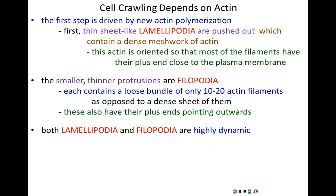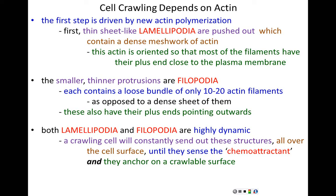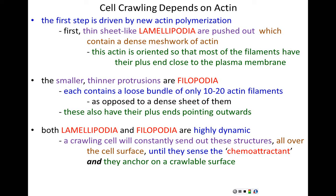Both lamellipodia and filopodia are highly dynamic and constantly changing. A crawling cell will only send out these structures to a region where it has sensed its signaling molecule — its chemoattractant. There are receptors on the cell surface specific for the signaling molecule. Wherever the signaling molecule is most concentrated, that portion of the cell begins to become lamellipodia and filopodia, sending out a thin sheet-like cell membrane structure towards the chemoattractant, and then filopodia reach out a little bit more.